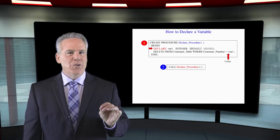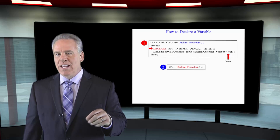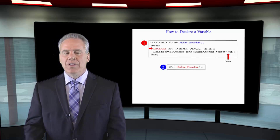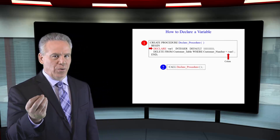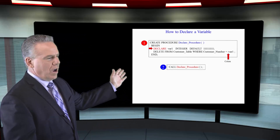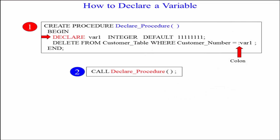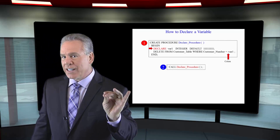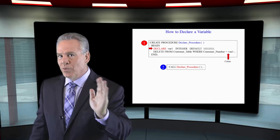One thing you must do when you create stored procedures is learn how to declare a variable — this is going to be worth its weight in gold. Here we create a 'declare_procedure', any name will do, open paren, close paren. We have our begin and end statements. Then you see me say declare 'var1' — that's its name, and it is a data type of an integer. I can say I want it to default to customer number 11111111.